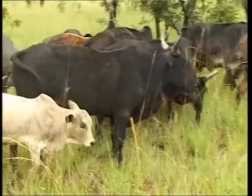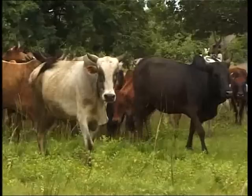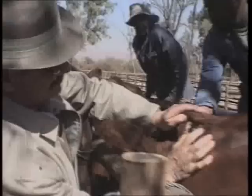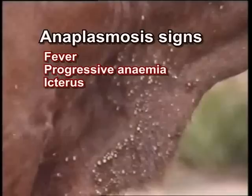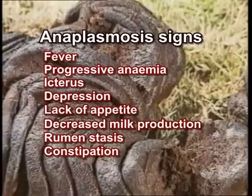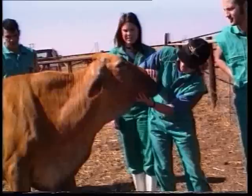As in the case of babesiosis, a largely non-specific age-related immunity protects calves up to the age of about nine months from serious disease. Thereafter, susceptibility to severe disease gradually increases with age. The incubation period following tick transmission is exceptionally long compared to the other tick-borne diseases, and may vary from about three to eight weeks, with an average of four to six weeks. Anaplasmosis is generally characterised by fever, progressive anaemia, and icterus. Other signs include depression, lack of appetite, decreased milk production, rumen stasis, constipation often indicated by the presence of dry bile-stained faeces, weight loss, and nervous signs such as head pressing and aggression, which could be confused with symptoms associated with cerebral babesiosis and heartwater.